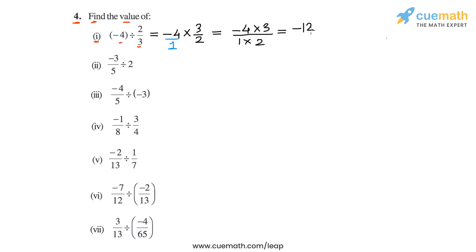Multiplying the denominators: 1 into 2. So minus 4 into 3 is minus 12, and 1 into 2 is 2, giving us minus 12/2. Dividing above and below by 2, we get minus 6/1, which we write as minus 6. So in part 1, the value of the expression is minus 6.